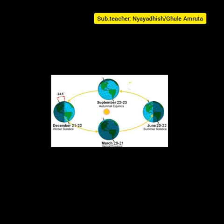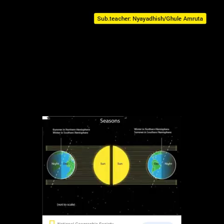The Earth gets less heat in these parts and therefore it is winter. In the southern hemisphere, in the period from 23 September to 22 March, the days are longer than the nights. The southern hemisphere gets more heat and it is summer here.